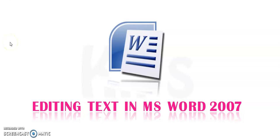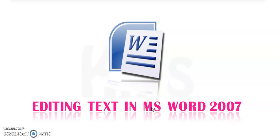Good morning. Today's class we will start Chapter 5: Editing Text in MS Word 2007. Open your book to page number 36. This lesson is about MS Word that you have learned in earlier classes. MS Word is used for nearly all typing work. We can make long documents and present them very effectively. Different formatting can be applied in MS Word on the text.